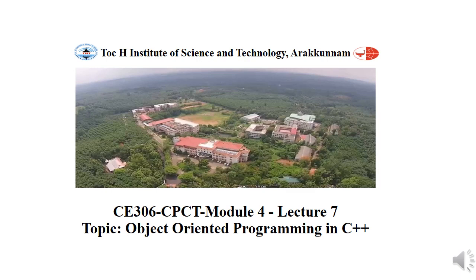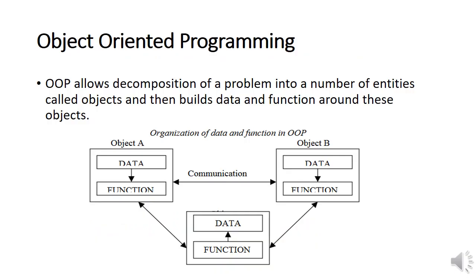In this video tutorial we will discuss the concept of object-oriented programming in C++. Object-oriented programming divides the entire problem into a number of entities called objects, then data and functions are built around these objects. Each object contains data and functions, and one object can communicate with other objects. This concept is called object-oriented programming.